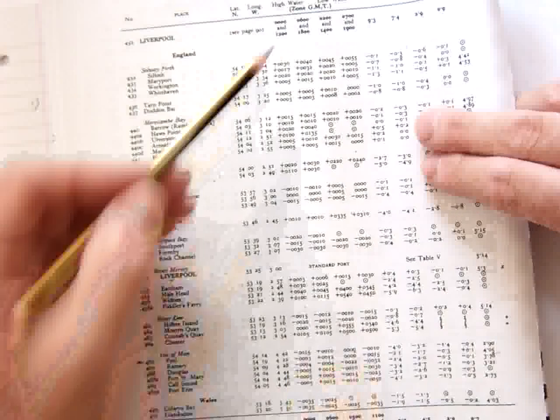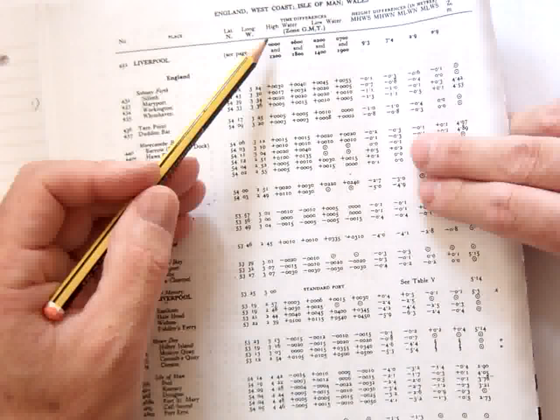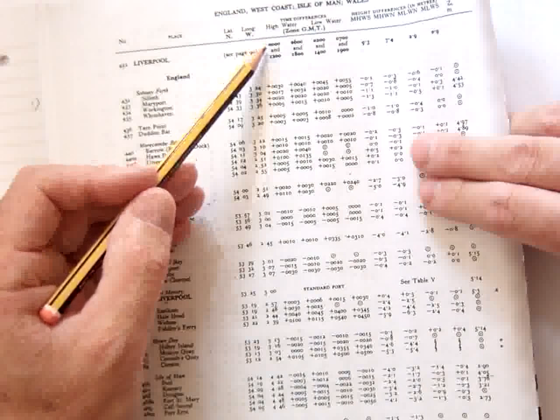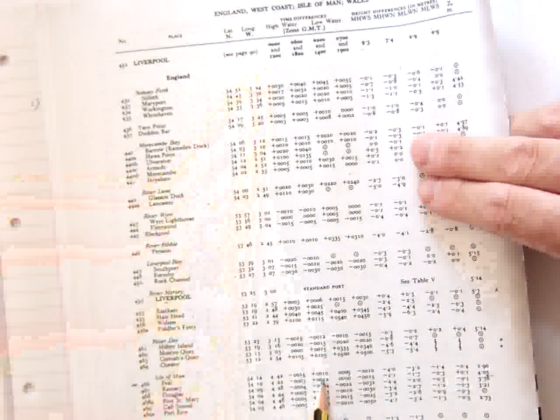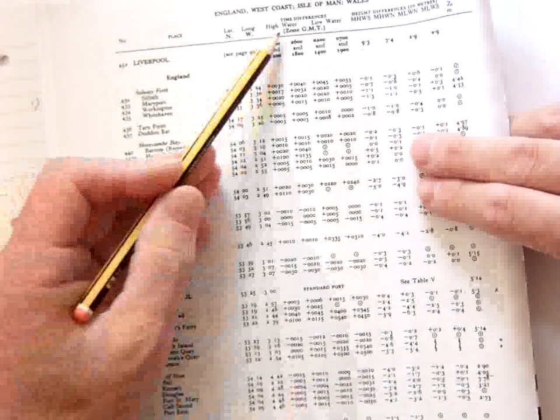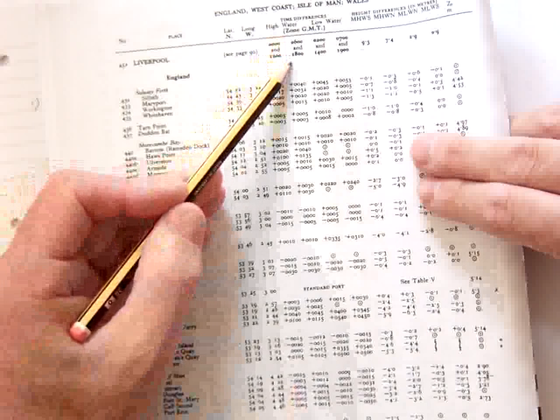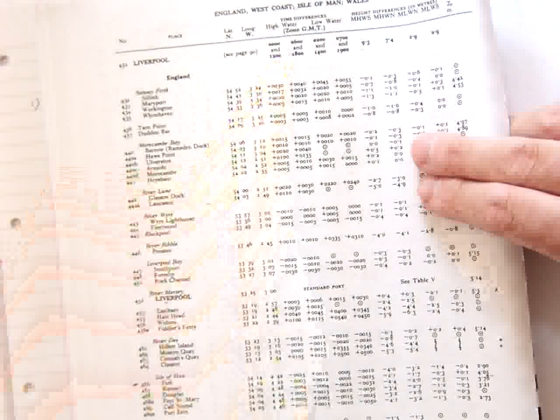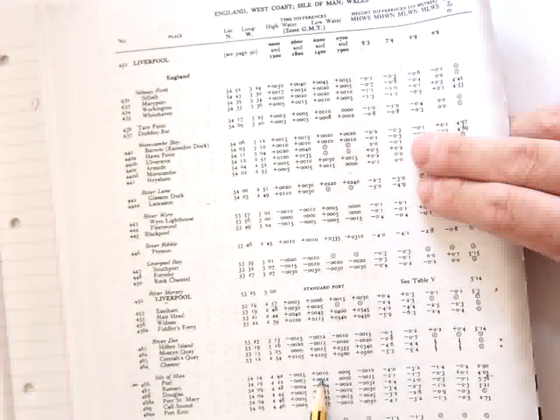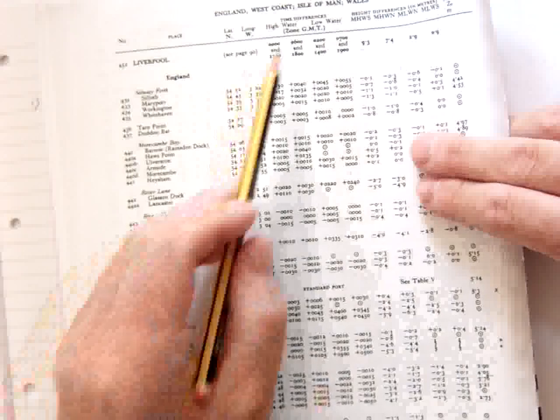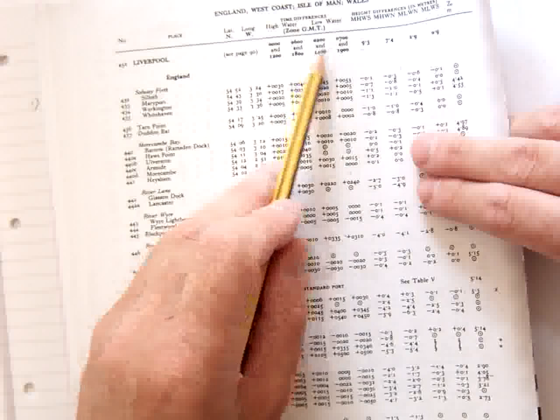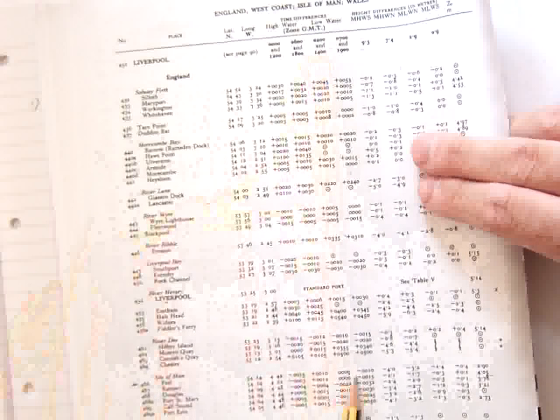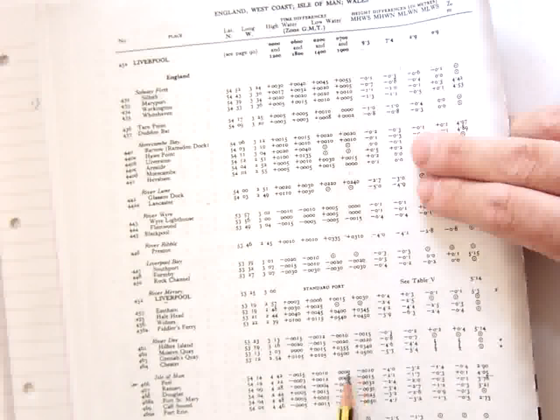What that means is that if, for example, high water at Liverpool was 0000 or 12 o'clock, then the correction for Peel would be minus 15 minutes. If the high water at Liverpool had been at 6 o'clock in the morning and 6 in the evening, then our correction would have been plus 10 minutes. But it's never going to be that easy because the times of low water and high water are always going to fall between these values. So as they fall between those values, then the correction we use must fall between the values that were given down here.